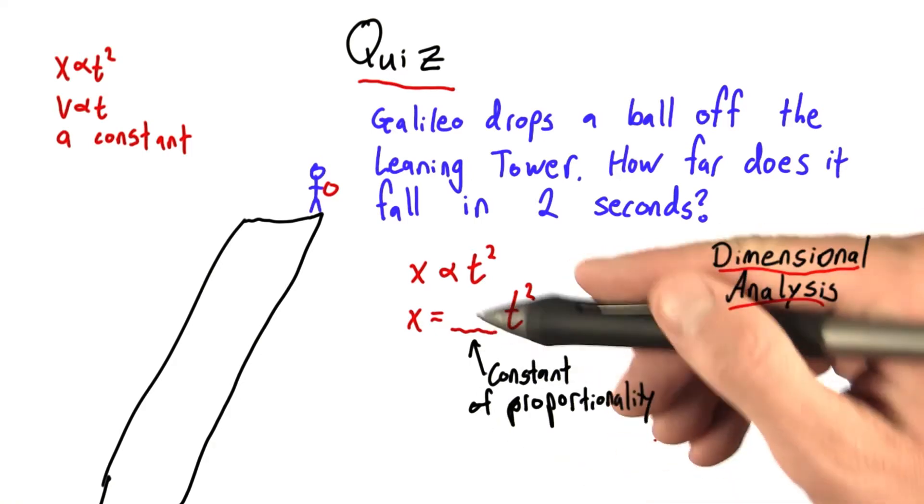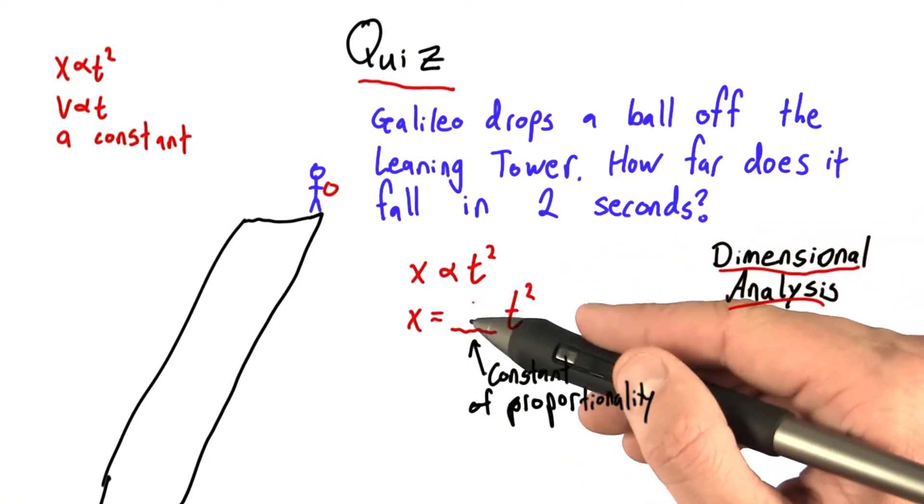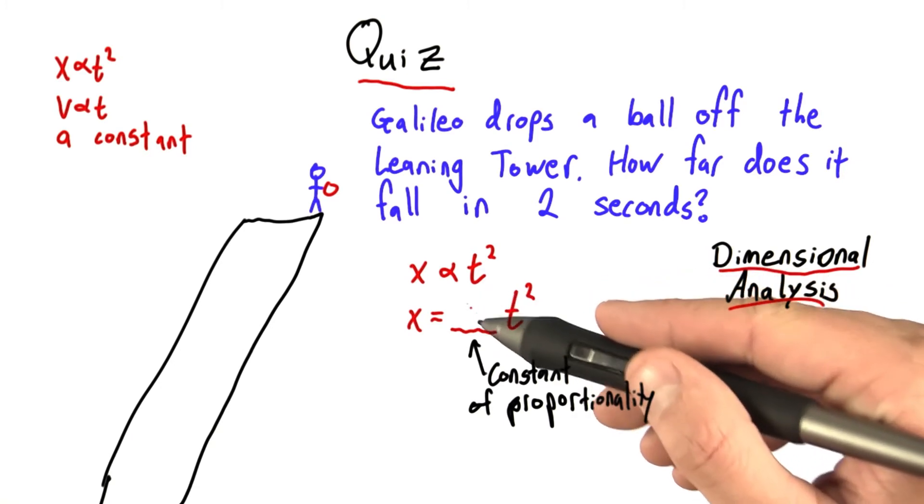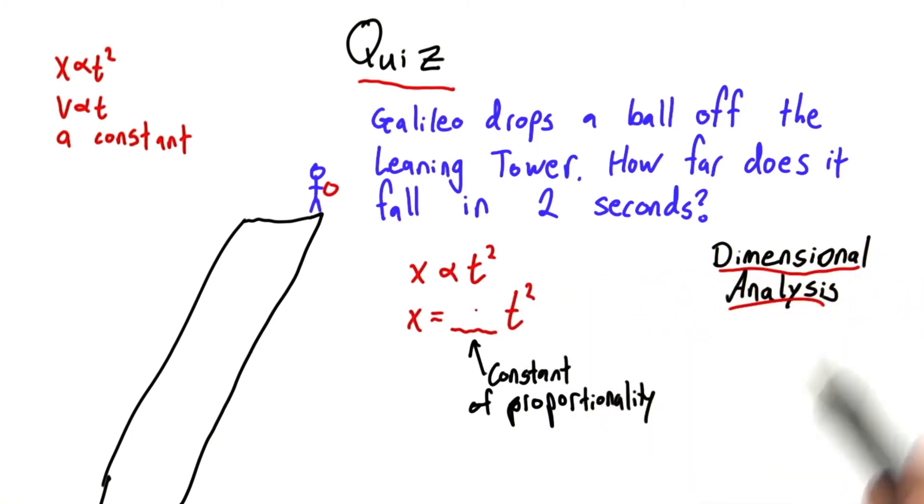Because right now we know nothing about this constant. It could have units of length, it could have units of time, it could have units of time squared over length cubed, we just don't know. Let's use dimensional analysis to figure out what the units of this constant should be.